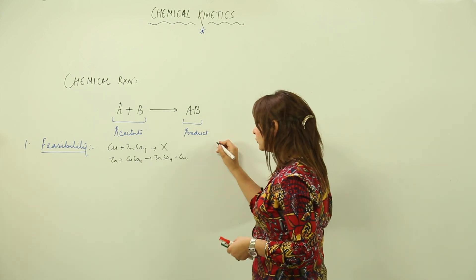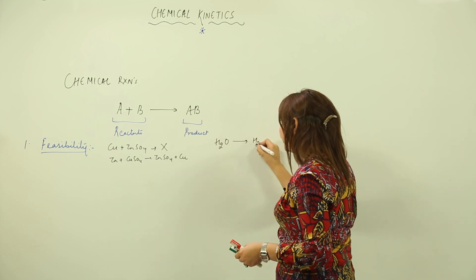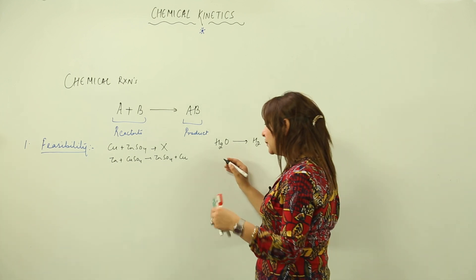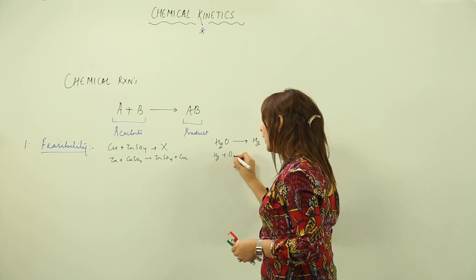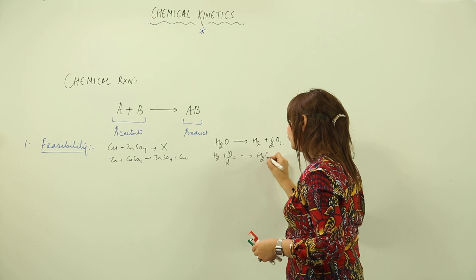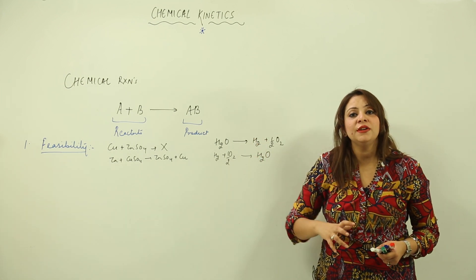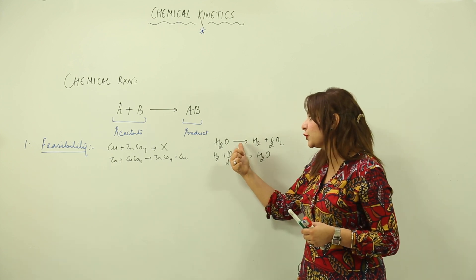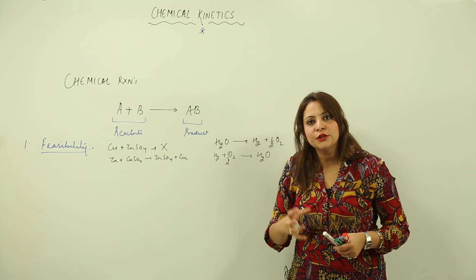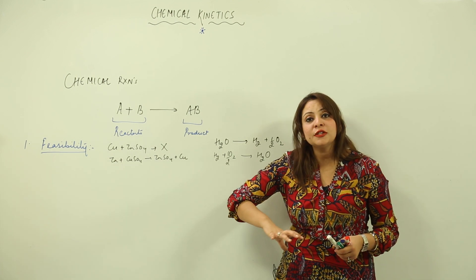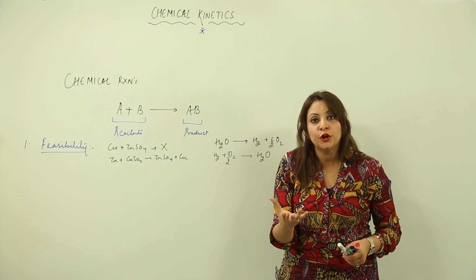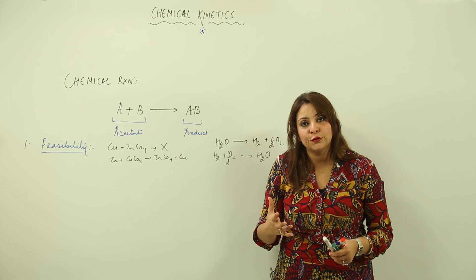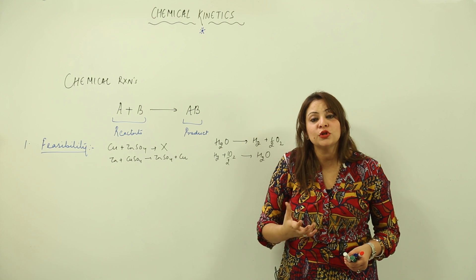One more example: consider water — if I want to break water into its components, H₂O will break into H₂ and half O₂ when balanced. Similarly, if I want to form water, I react H₂ plus half O₂ to form water. Both reactions appear the same but are different in terms of feasibility. Breaking water into its constituents is not a spontaneous reaction — you have to supply energy from an external source. If we want to break water into components, we have to pass electric current, which is the external source of energy making the reaction happen.